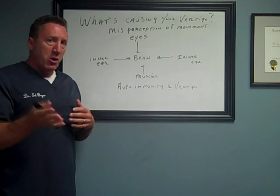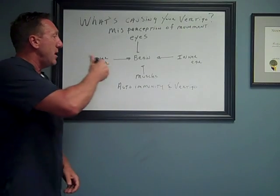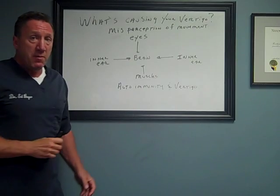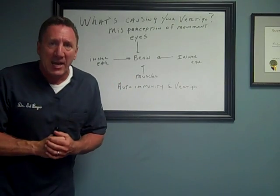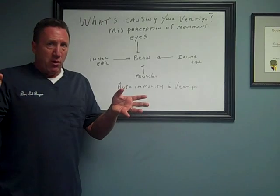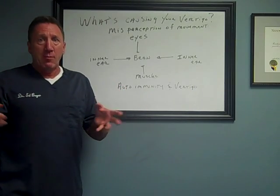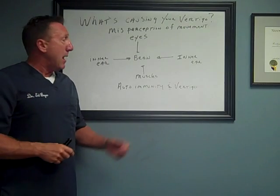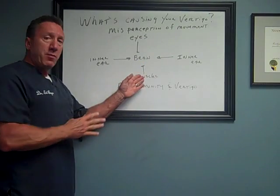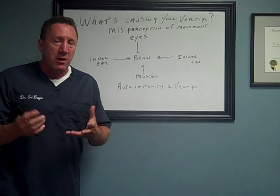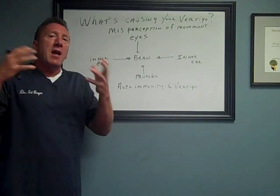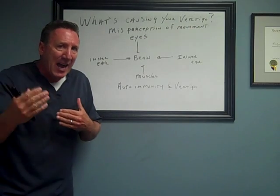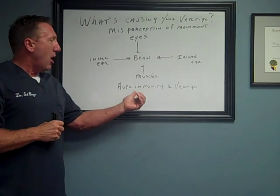What happens in vertigo is there's a problem either in the inner ear, muscles in the neck especially, or with vision — meaning the information going into the brain is inaccurate. That's called a peripheral vestibular problem, or peripheral vertigo. Sometimes the problem can be in the brain itself — the information from the muscles, the inner ear, and the eyes is accurate, but the brain is not calculating it properly. One of the things that can cause that, which I see in a lot of cases in my clinic, is an autoimmune condition.